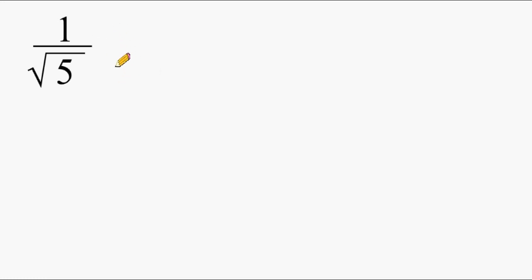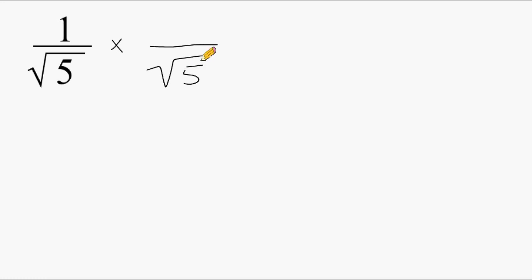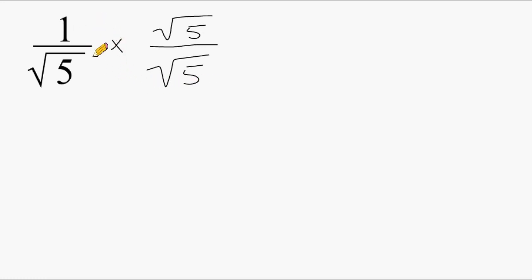Instead of multiplying this by the number 1, we just write the number 1 in a different way. We take our denominator that's under the radical and we rewrite that same value — the square root of 5. On the top, we write the exact same thing. The square root of 5 over the square root of 5 is still equal to 1 because it is something divided by itself. So basically we're not changing the value of 1 over the square root of 5, we're just rewriting the way it looks by multiplying it by 1.